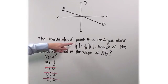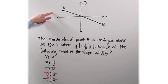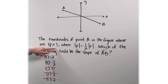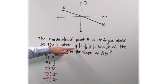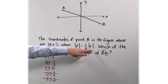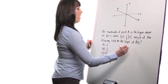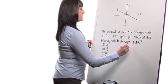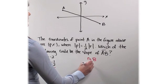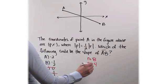And it tells me the coordinates of point A, which is right here, are p,r, where the absolute value of p equals one-half the absolute value of r. So I'm going to make r equal 8, which means p would equal 4.